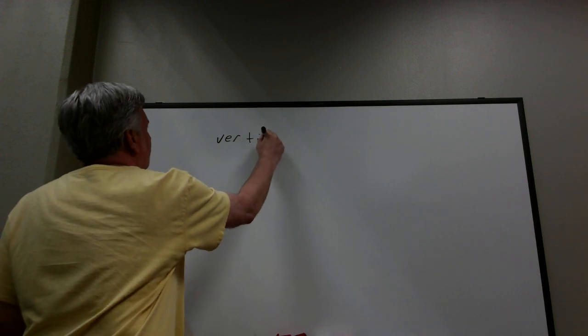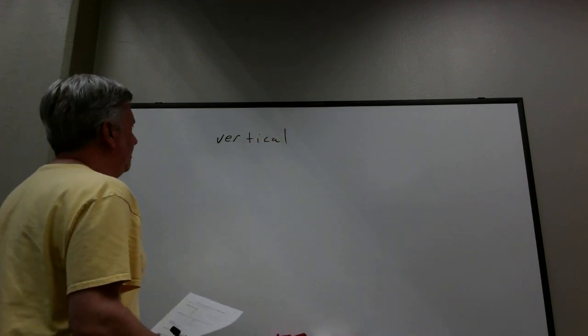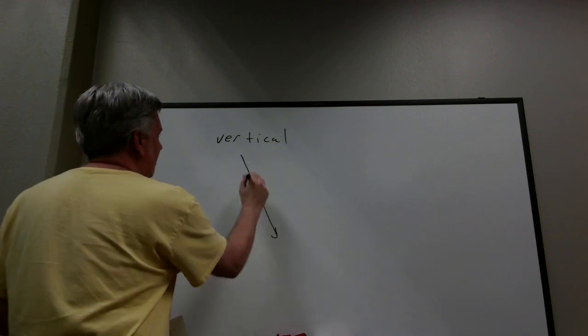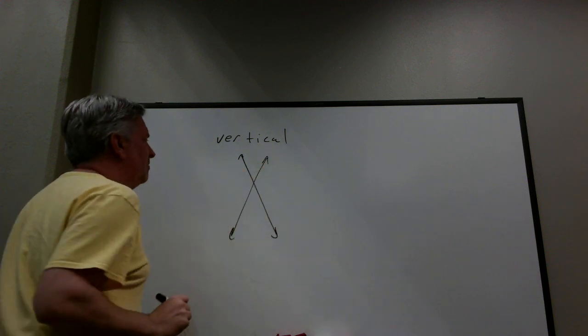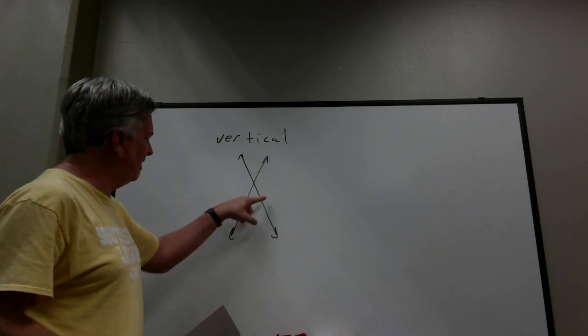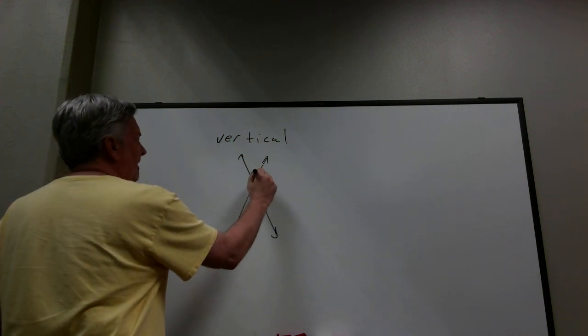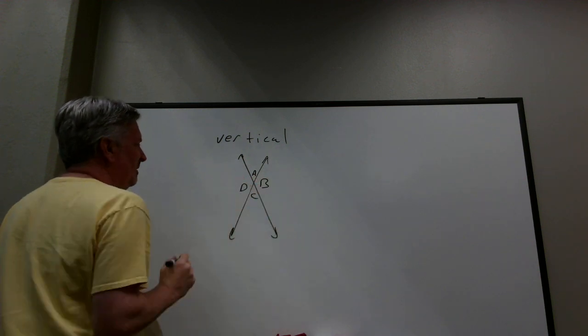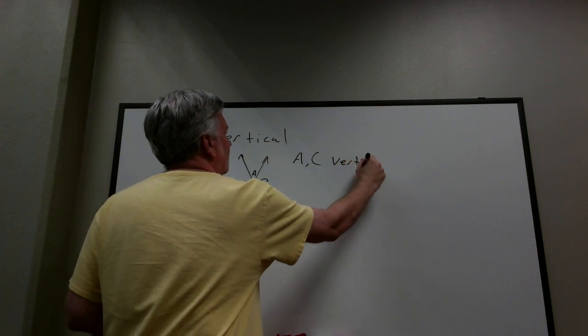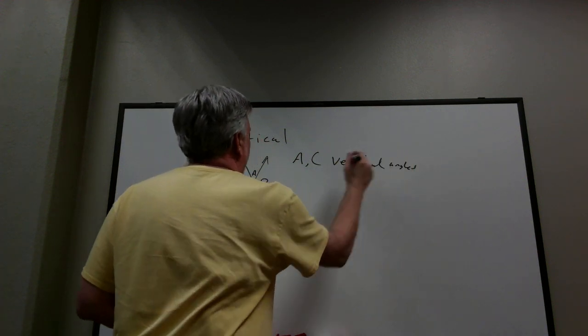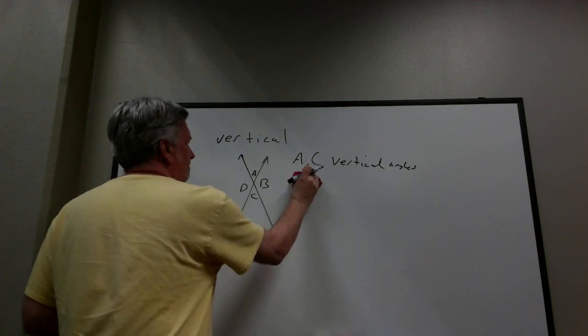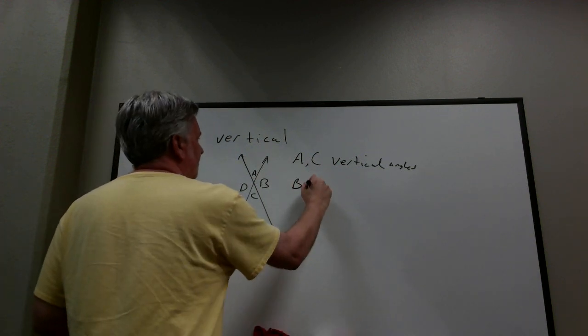We need some definitions. Instead of writing them out, we're just going to draw a picture. The first definition is vertical angles — notice it's spelled V-E-R-T-I-C-A-L, not C-L-E. If you have two lines that intersect, vertical angles are the angles that are opposite each other. We get four angles determined by the two lines. If I label them A, B, C, and D, then A and C are vertical angles and B and D are vertical angles — two pairs.